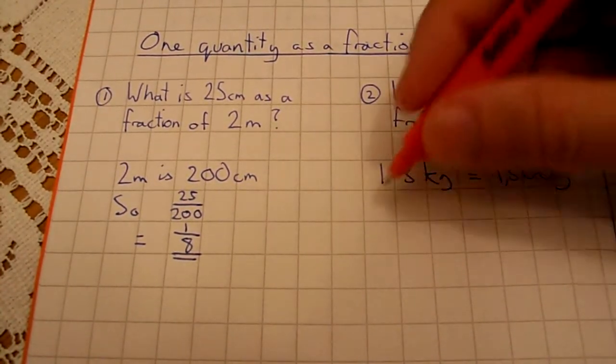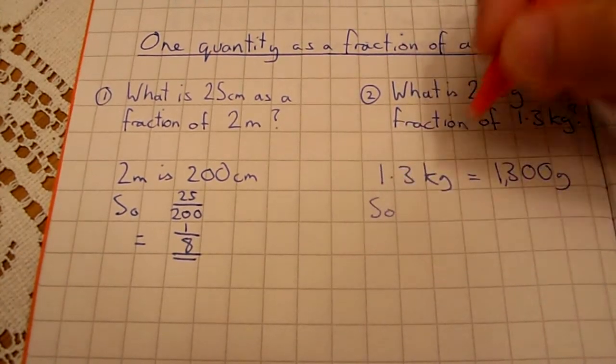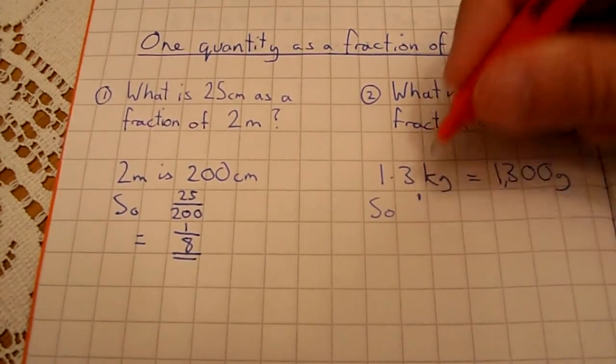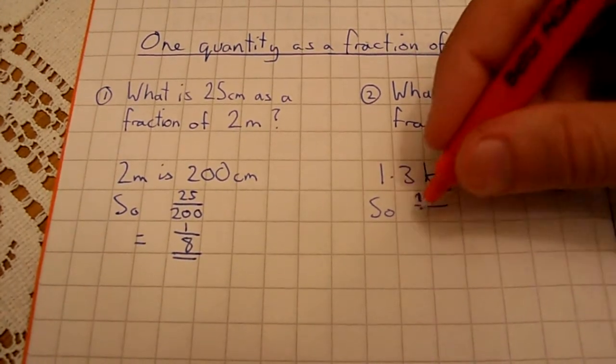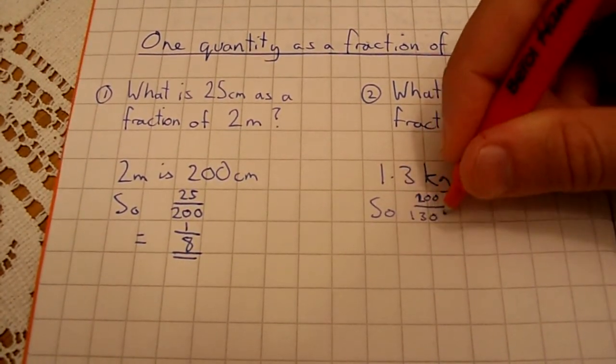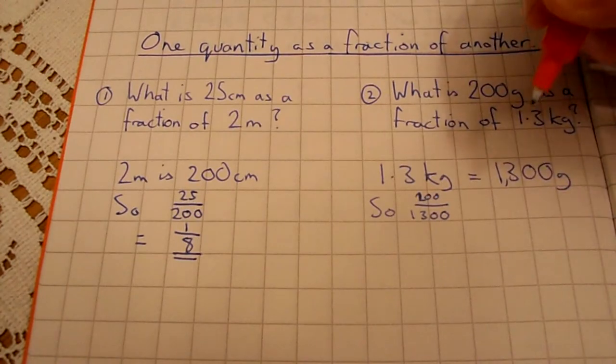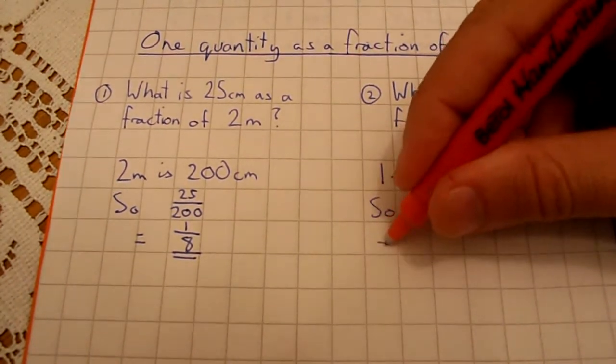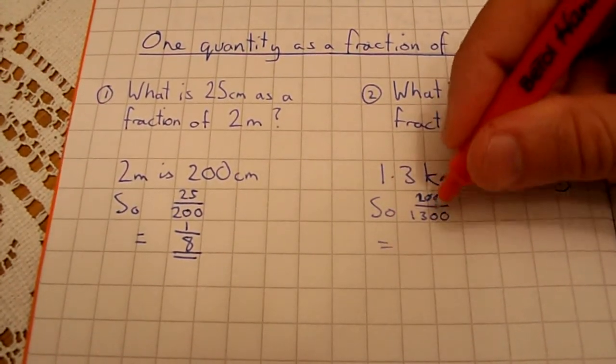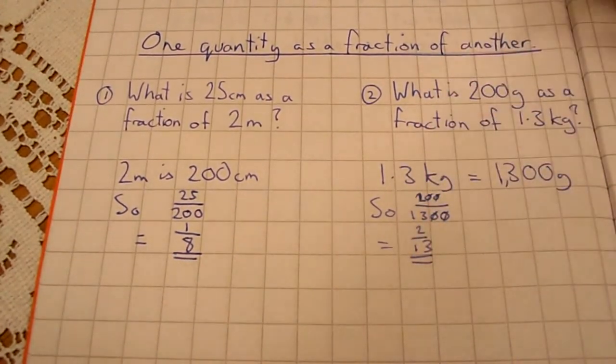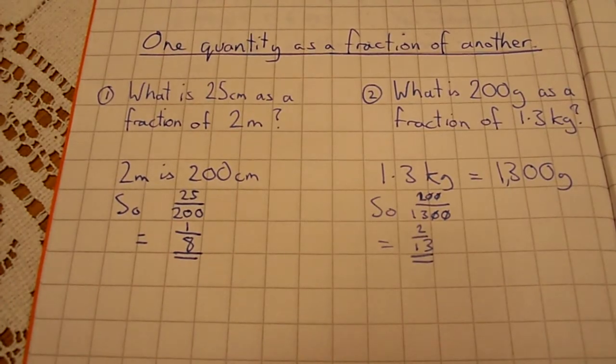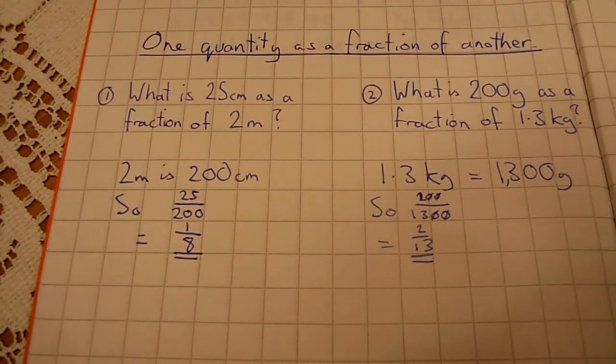What we get is, again, just write it like you say it. 200 grams out of 1,300 is our initial fraction. So we can simplify that, we'll just knock off the zeros, and we're going to be left with 2 out of 13. Both prime numbers, both can't be cancelled any further. Job done.